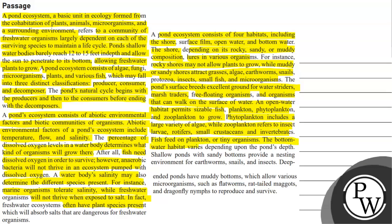The bottom water habitat varies depending on the pond's depth. Shallow ponds with sandy bottoms provide a nesting environment for earthworms, snails, and insects. Deep-ended ponds have muddy bottoms, which allow various microorganisms such as flatworms, rat-tailed maggots, and dragonfly nymphs to reproduce and survive.